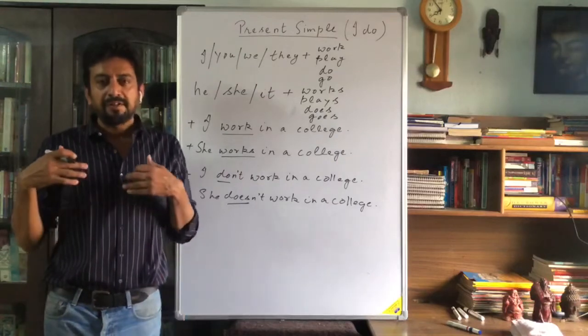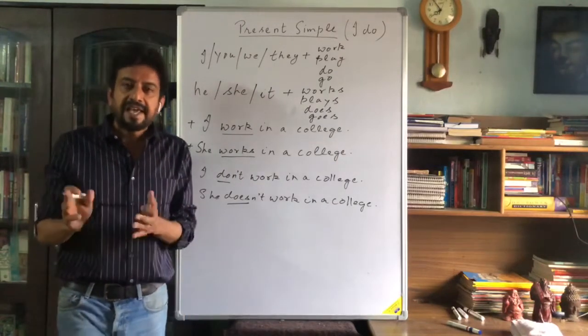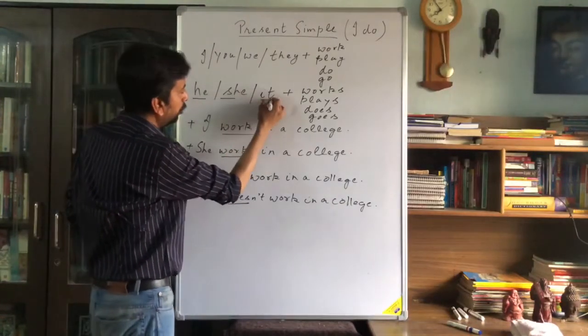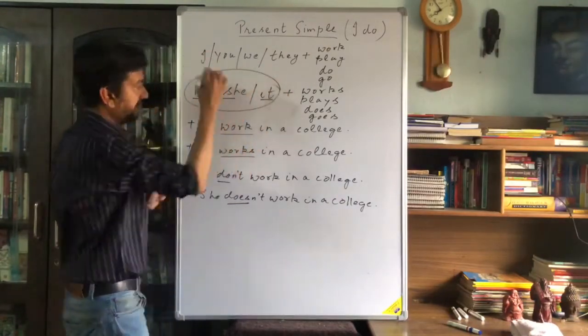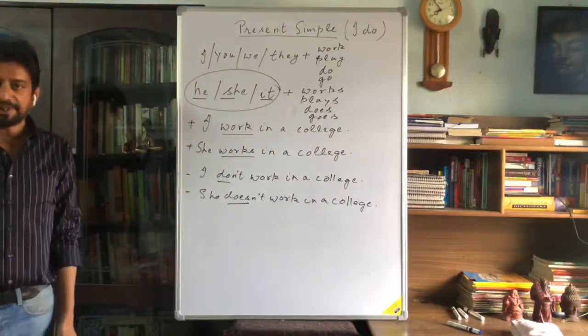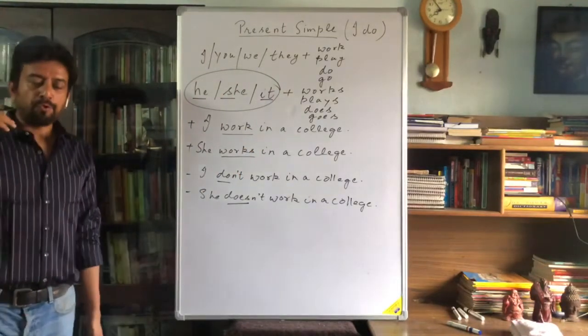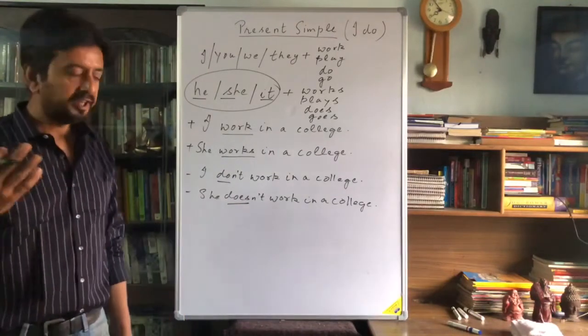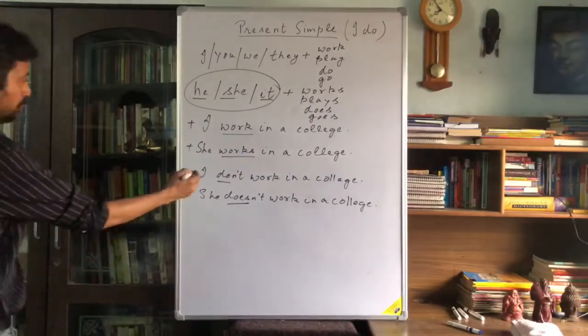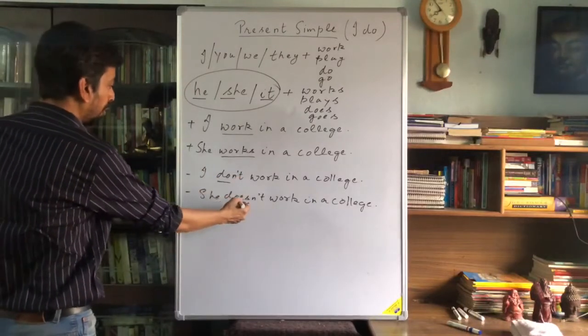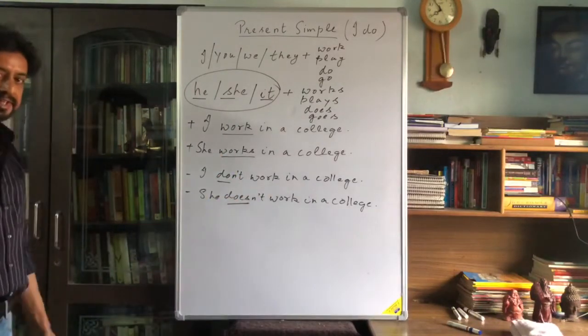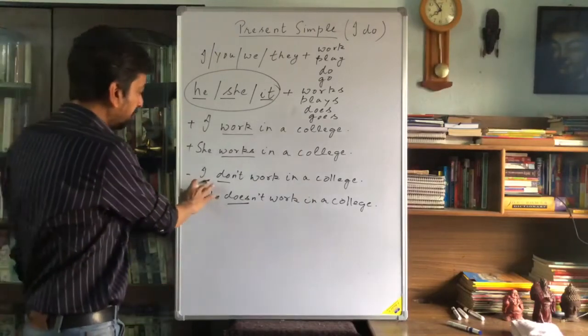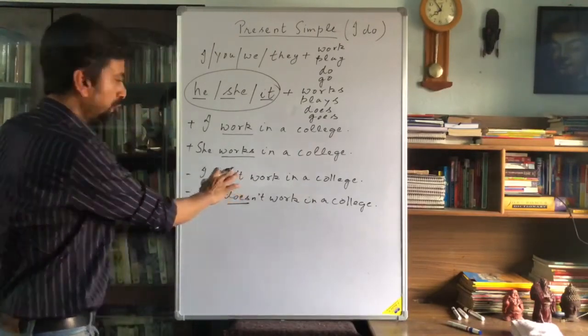In this particular group of subjects. And when you want to write the negative of it, then you would say don't or doesn't. Any sentence, if you want to write the negative of it, you can use don't or doesn't.